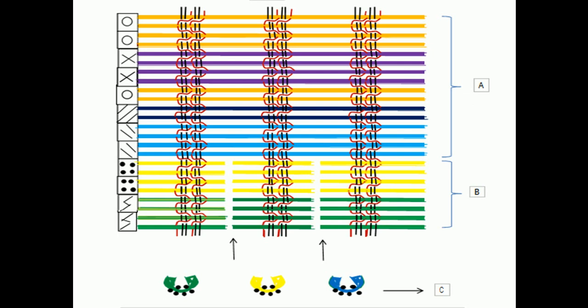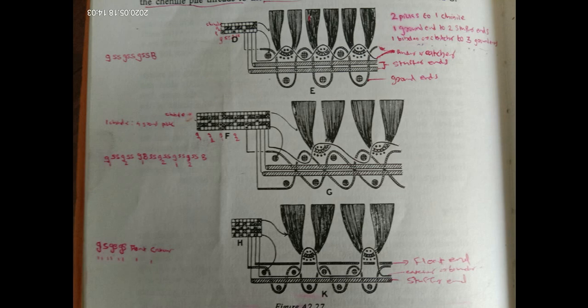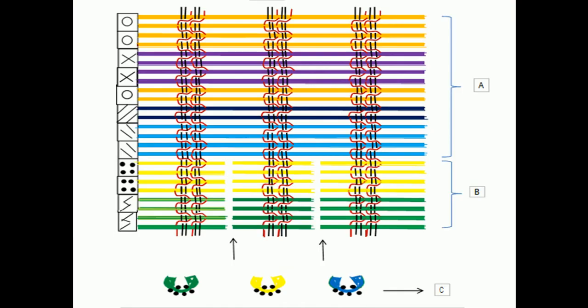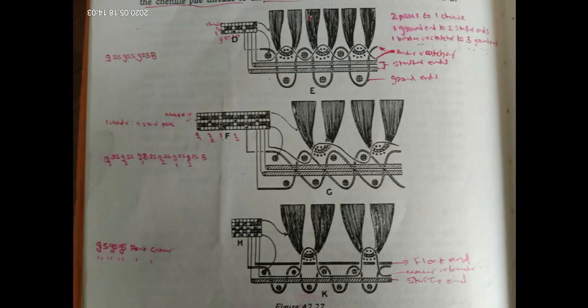Accordingly, the long strips — once cut — will be green, then yellow, then blue in this manner. After getting these strips, we wind them on a suitable special type of package. Then in the next loom process, a special type of arrangement is there.